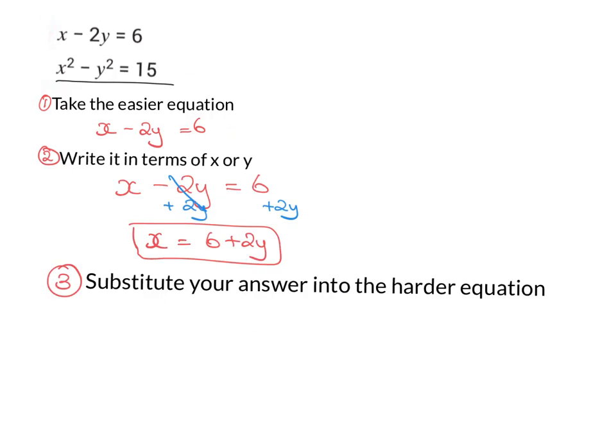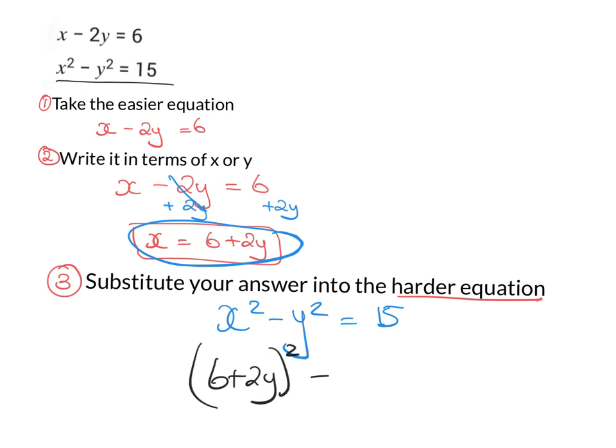Step three is substitute your answer into the harder equation or the non-linear one. If you have a look at this, obviously this one up here is the harder equation. It is x squared minus y squared equals 15. And I'm going to substitute this answer, the answer I got in step two. So I'm saying here that x is equal to 6 plus 2y. So it would be 6 plus 2y squared minus y squared equals 15.